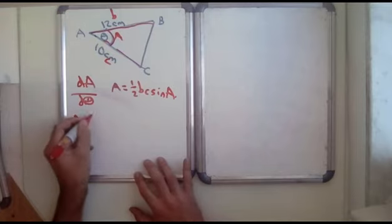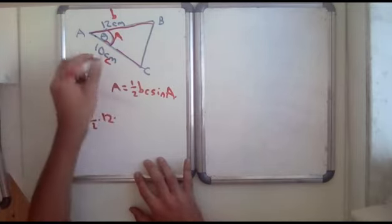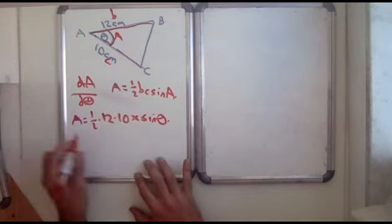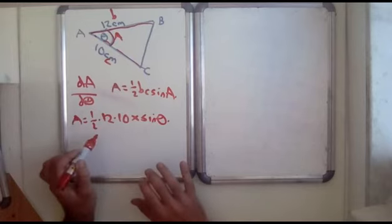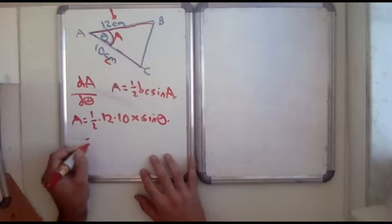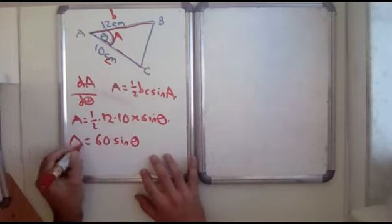So area equals half times side 12 times other side 10 times sine theta. So you can tidy that up. Well, half times 12 is 6, 12 times 10 is 60. So it equals 60 sine theta.